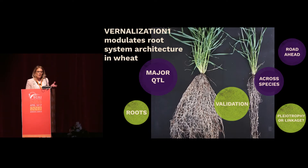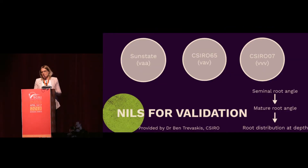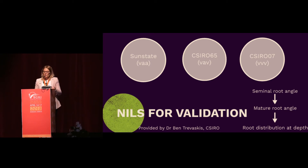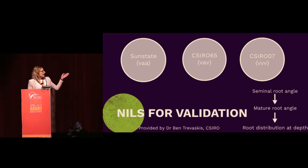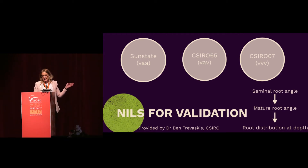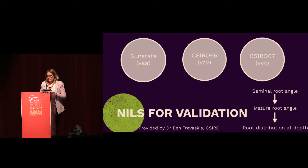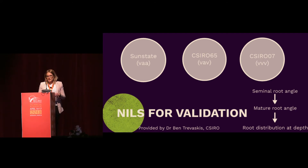That was how we initially identified that there's something between VRN1 and roots in wheat, and we wanted to validate it more closely. We used near-isogenic lines previously developed by Dr. Ben Trabaschus at CSIRO in Australia. These three near-isogenic lines combine different spring and winter alleles across the wheat genomes: Sunstate has a winter allele on the A genome and spring alleles on B and D; CSIRO 65 has winter on A, spring on B, and winter on D; and the final line has all winter alleles. We then looked at seminal root angle, mature root angle in the field, and distribution of roots at depth.